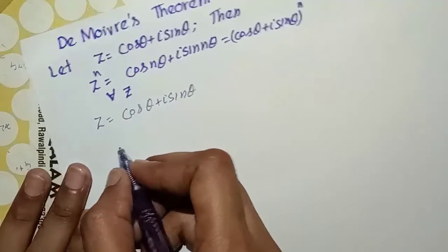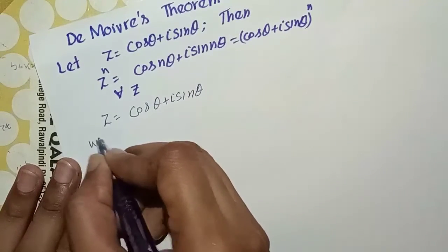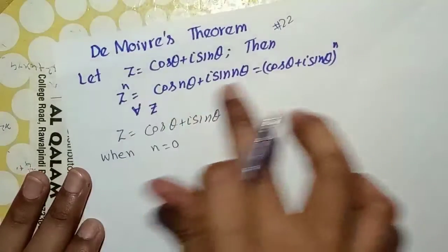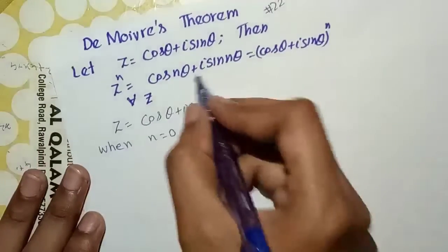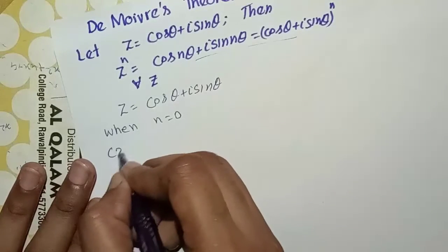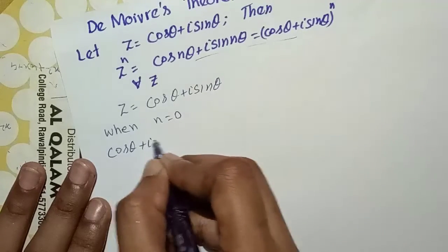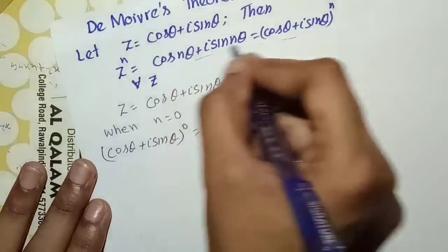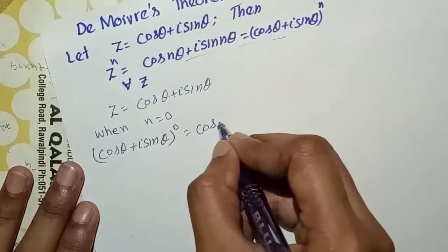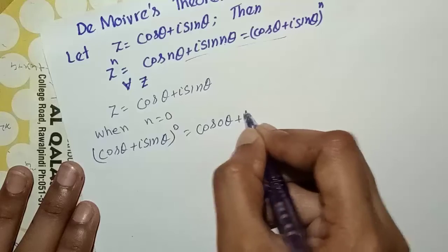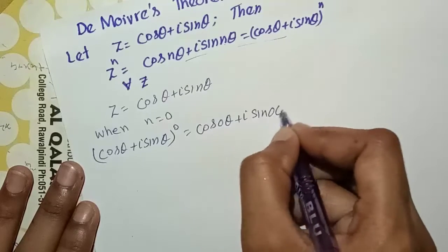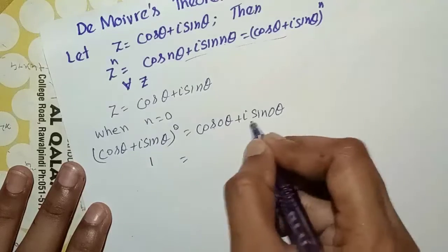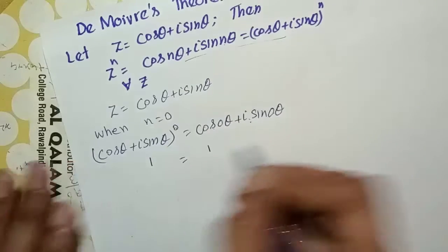First, we have to prove n equal 0. If n equals 0, then we check: cos theta plus iota sin theta to the power 0 equals cos(0·theta) plus iota sin(0·theta). Cos 0 is 1, so we get 1 equals 1. This is true.